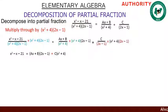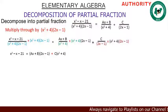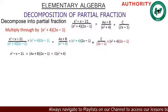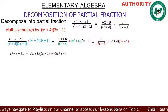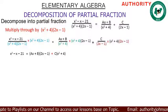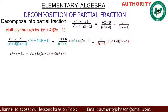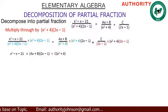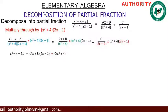For the c term, 2x minus 1 cancels, leaving c times (x squared plus 4). So after cancellation we are left with: x squared minus x minus 21 equals (ax plus b)(2x minus 1) plus c(x squared plus 4).